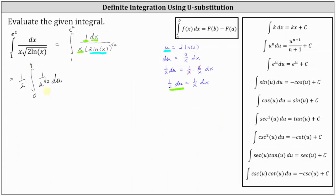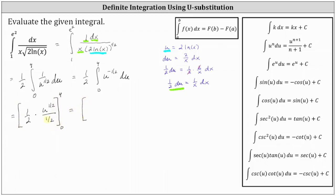Before we determine the antiderivative, let's write 1 divided by u to the 1 half as u to the power of negative 1 half. So here we have 1 half times the integral from 0 to 4 of u to the power of negative 1 half du. Then we'll find the antiderivative: we have 1 half times u to the power of negative 1 half plus 1, which is 1 half, divided by 1 half. Dividing by 1 half is equivalent to multiplying by 2. 1 half times 2 is 1, giving us u to the power of 1 half, which simplifies to u to the 1 half.